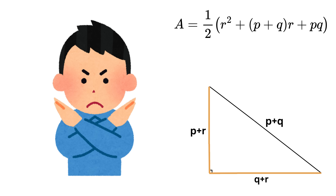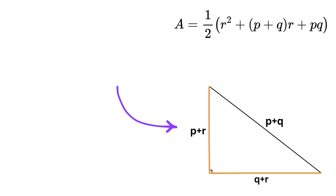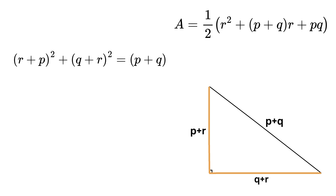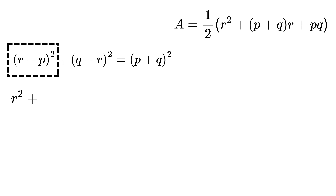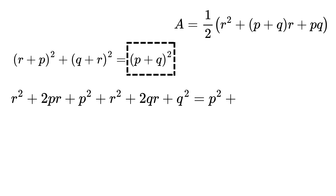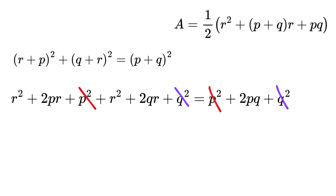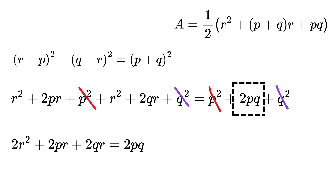Since this is a right triangle, we apply the Pythagorean theorem: (r + p)² + (r + q)² = (p + q)². Expanding gives r² + 2pr + p² + r² + 2qr + q² = p² + 2pq + q². The p² and q² terms cancel, leaving 2r² + 2pr + 2qr = 2pq.